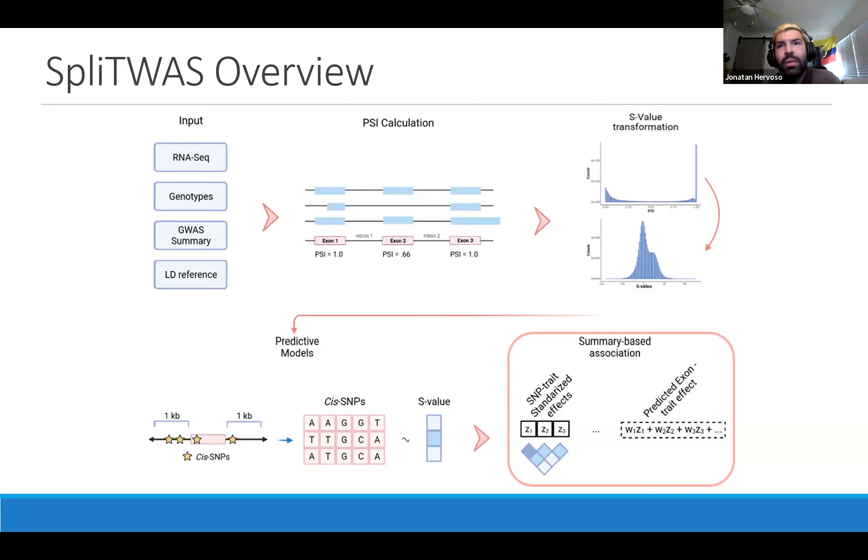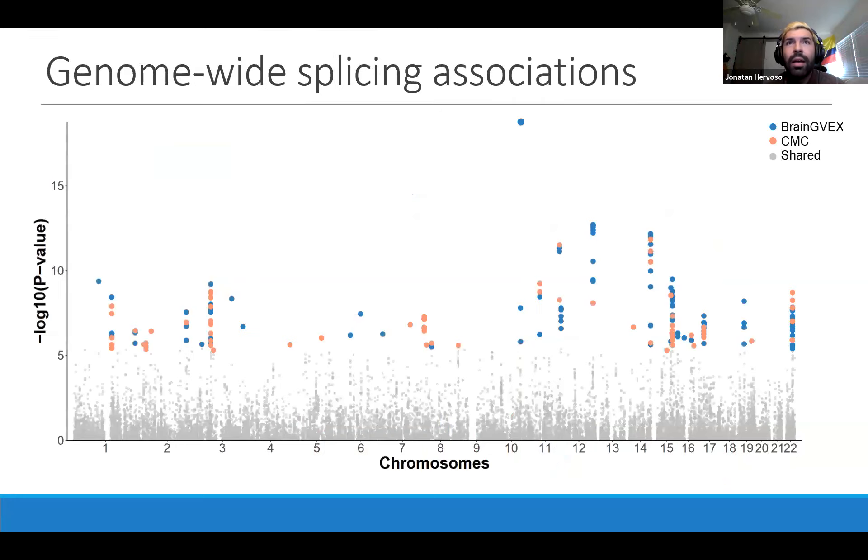From here, I'm going to delve into the results. As traditional with most genetic studies like GWAS and TWAS, I'm showing here genome-wide splicing associations for both cohorts, with blue dots being for BrainGVEX and pink dots being for the CommonMind consortium. We can see there are quite a few hits. All of these hits are at the exon level, and there are splicing signals that are particular for each dataset, but there's a lot of concordance between both datasets and associations across the genome.